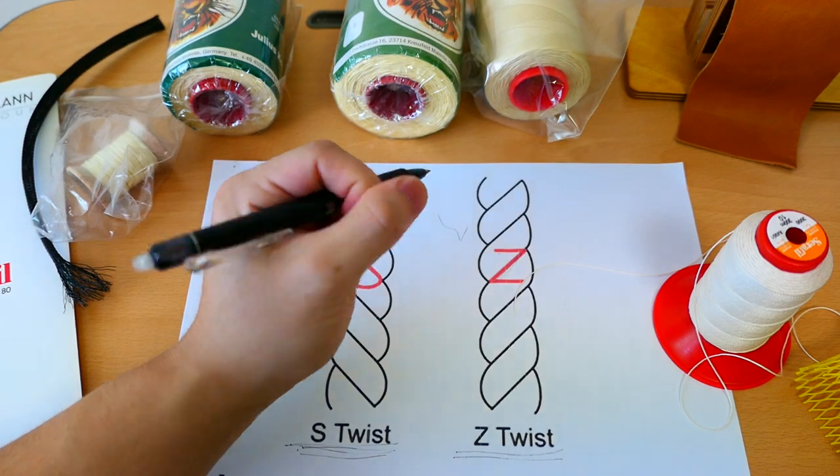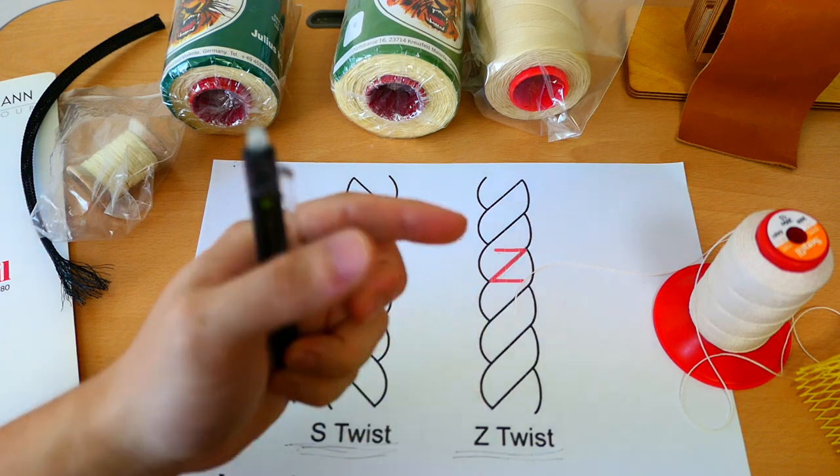Most threads are Z-twist. If you use Z-twist thread on your hand stitching, the thread will untwist while you do the stitching. For sewing machines it's okay because the direction of stitching is opposite of hand stitching, so the thread is tightened. But hand stitching is clockwise, so as you do the stitching you will unwind the thread. The part where you're holding with the needle will twist around.